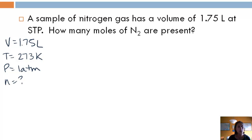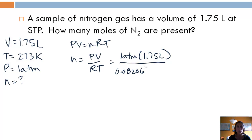Now there's two ways to go about this problem. First, you could use the ideal gas law, PV equals NRT. N would equal PV over RT. And then you could plug in 1 atmosphere times 1.75 liters. R is 0.08206 liter atmospheres per mole Kelvin, and temperature is 273 Kelvin. Now if you calculate all of this out, you should get 0.0781 moles of N2.